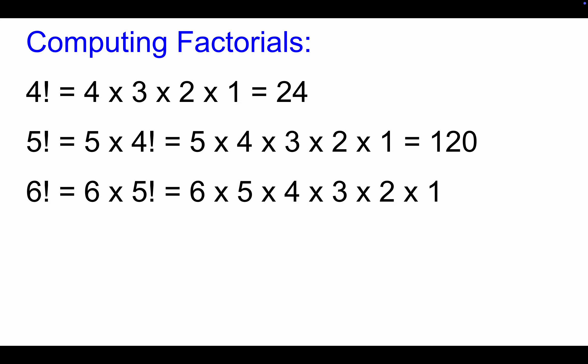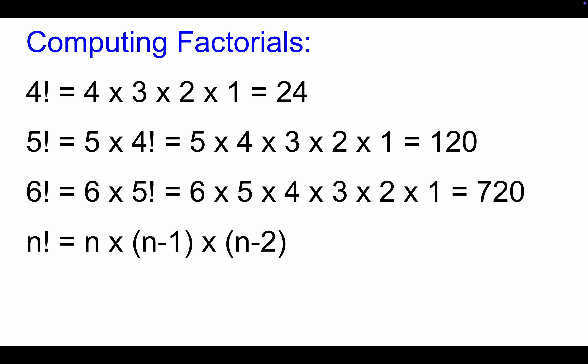And 6 factorial equals 720. If we want to say this generally, n factorial equals n times (n minus 1) times (n minus 2), all the way down to 3 times 2 times 1. This assumes n is at least 6 or so — if you're doing 2 factorial, that's just 2 times 1.